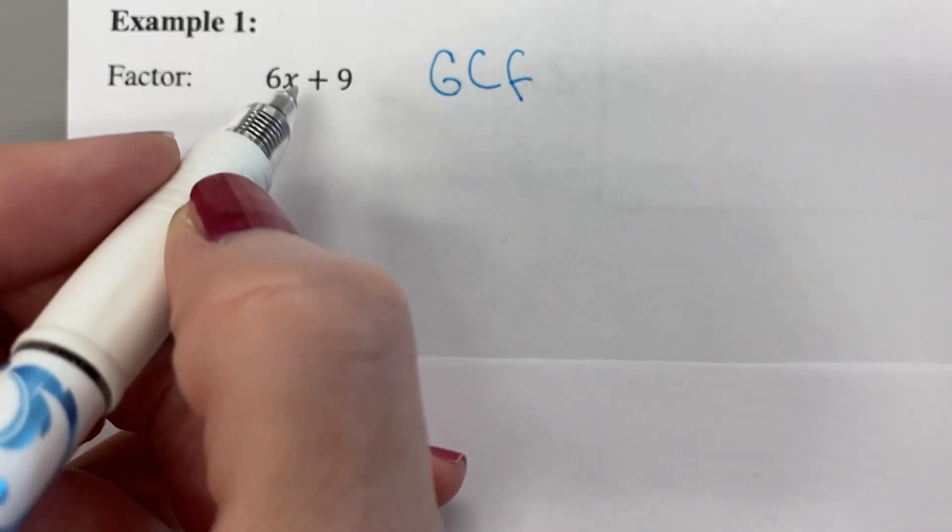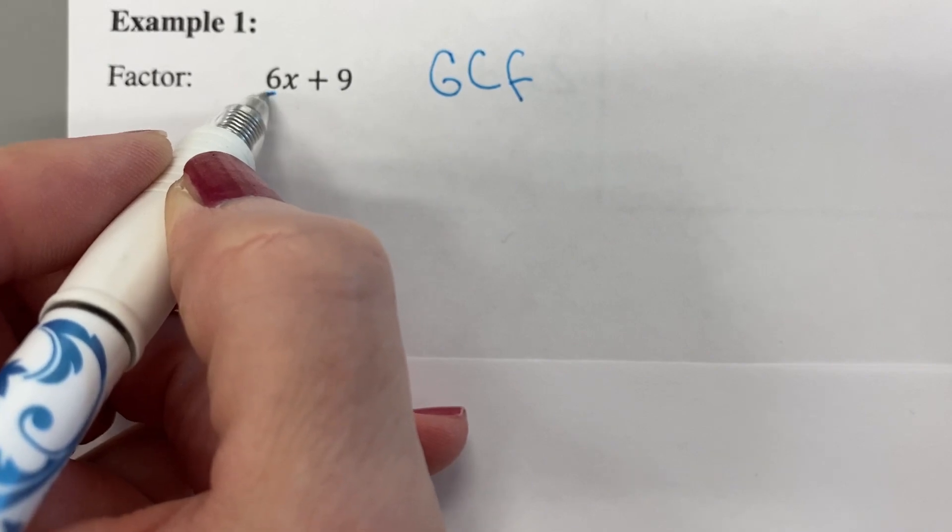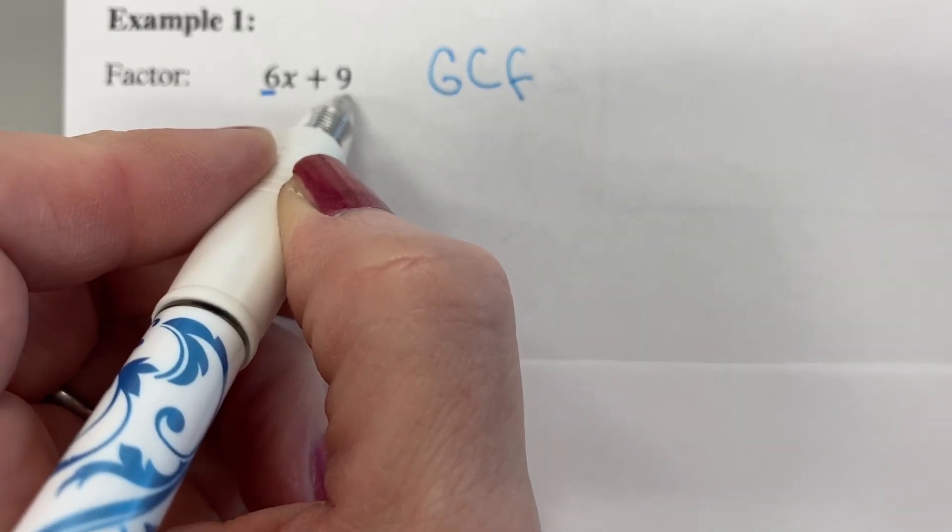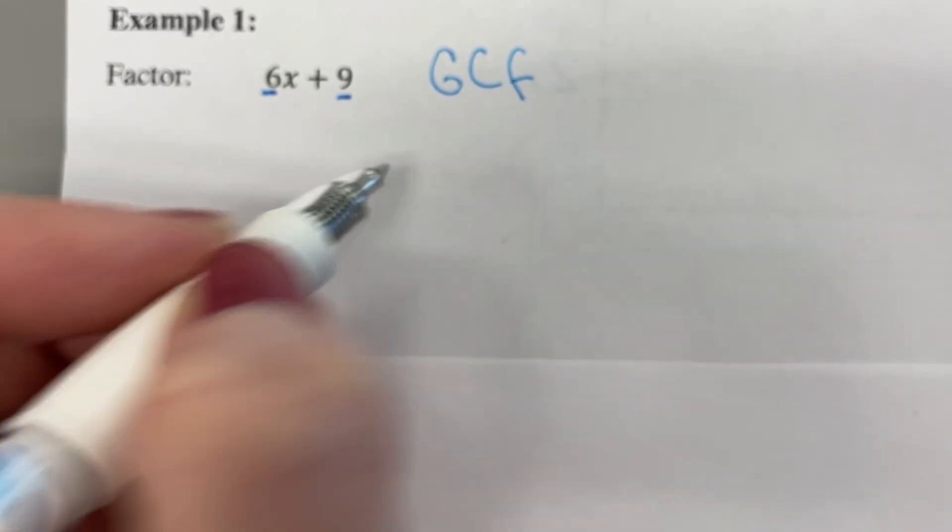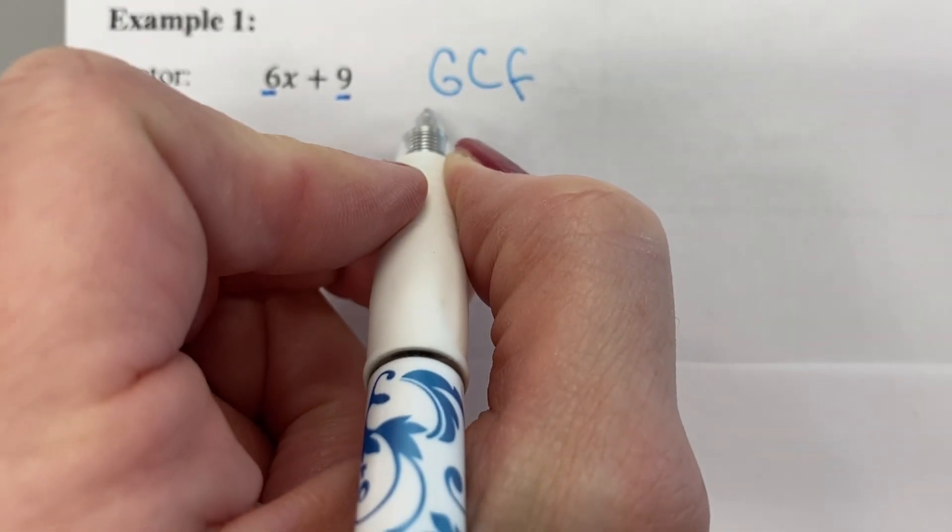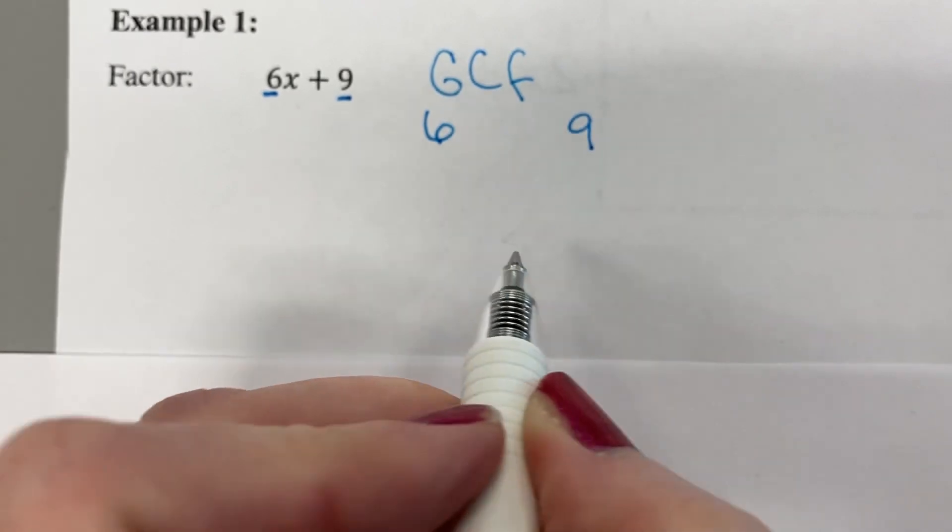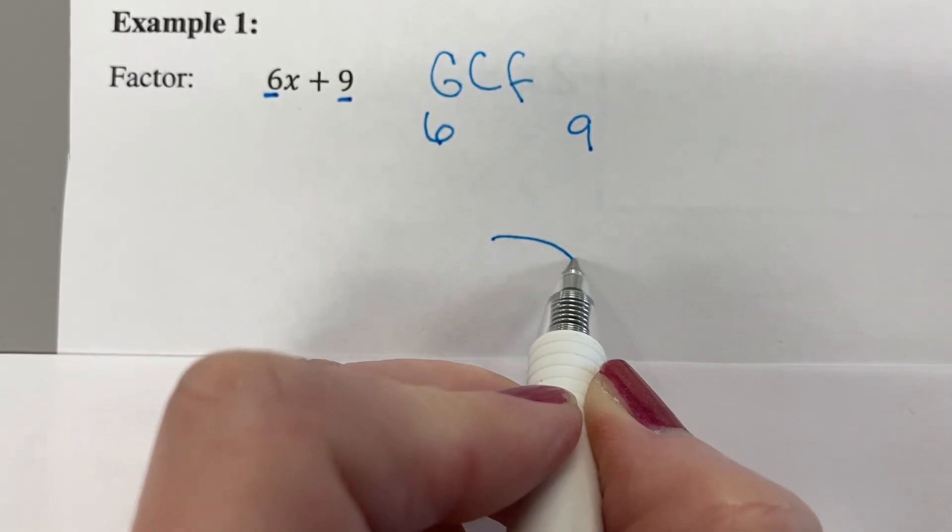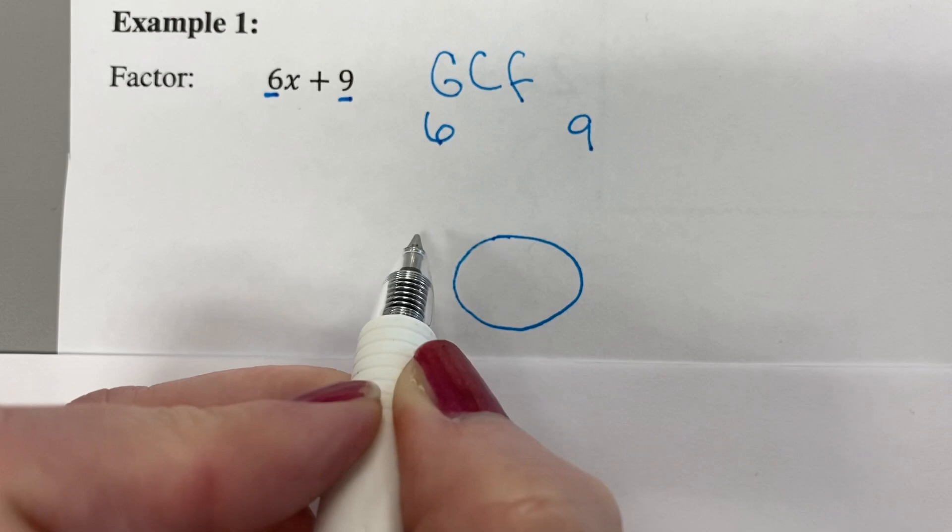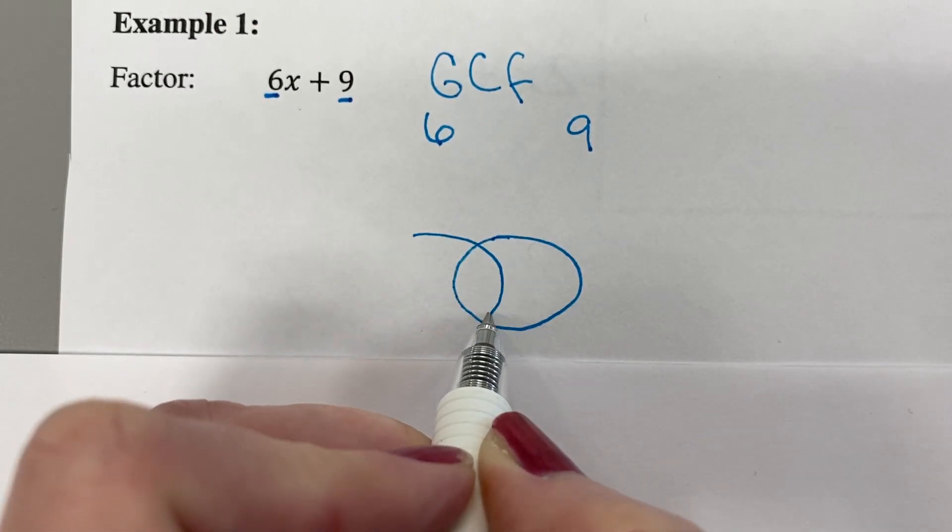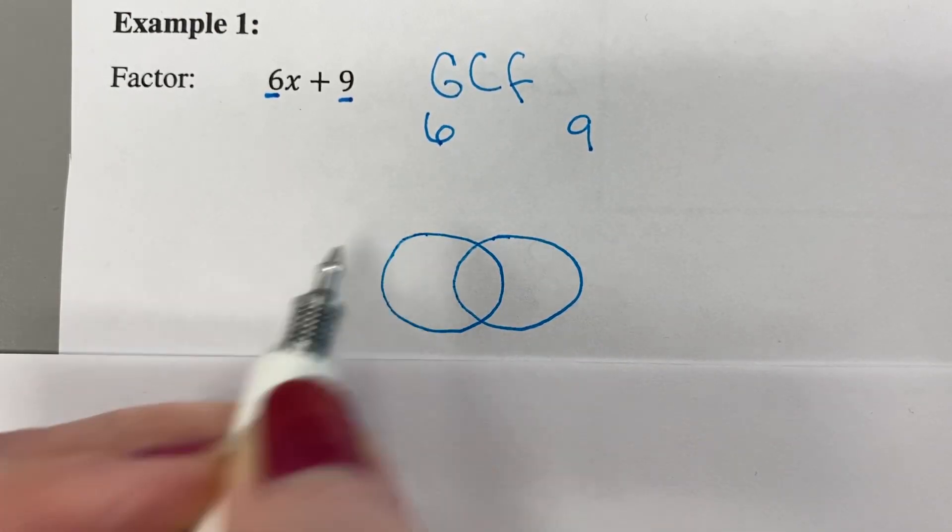So you're going to take the two numbers that you're given. The coefficient here, 6, and the number here on the back, 9. And we're going to write those down over here, a 6 and a 9. And then we're going to draw that Venn diagram, like we did in our last lesson, so that we can find that GCF.